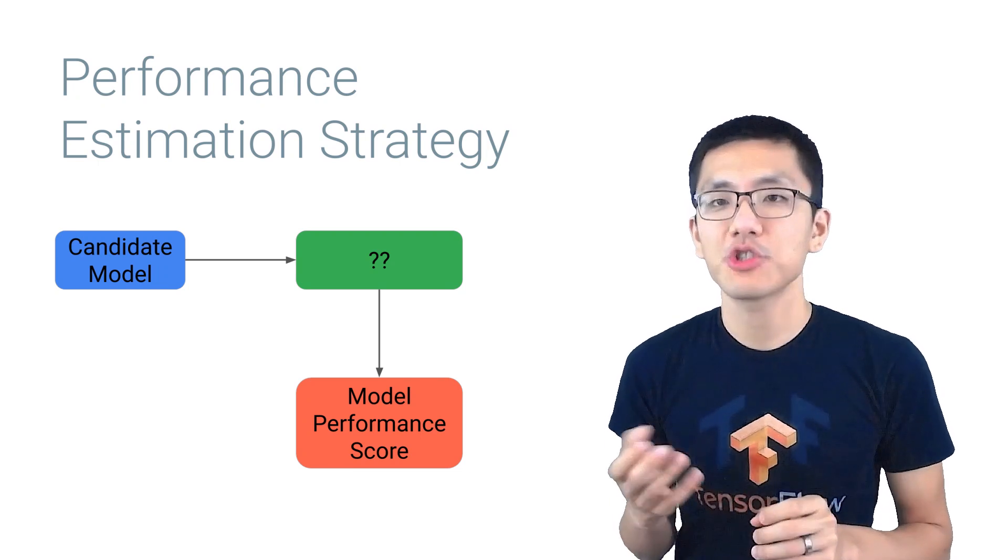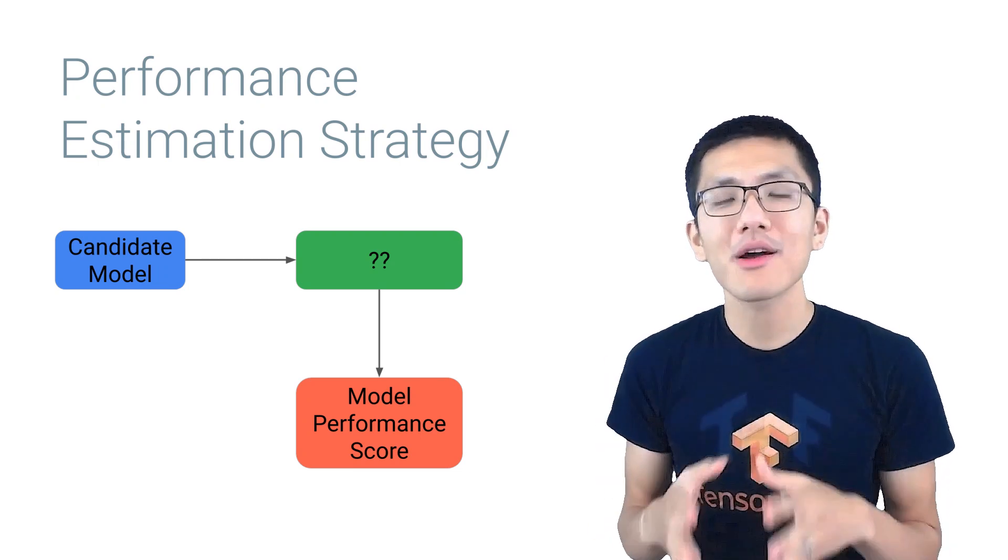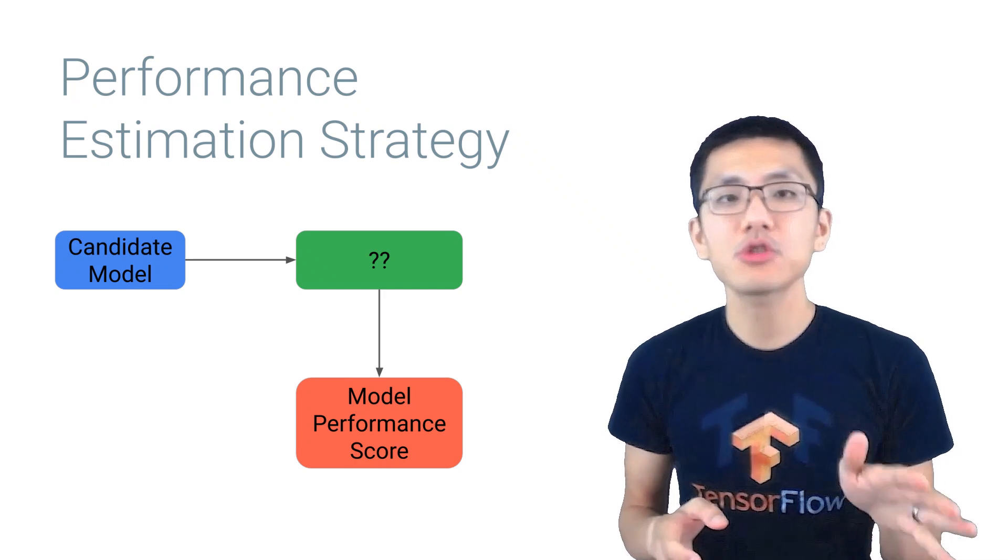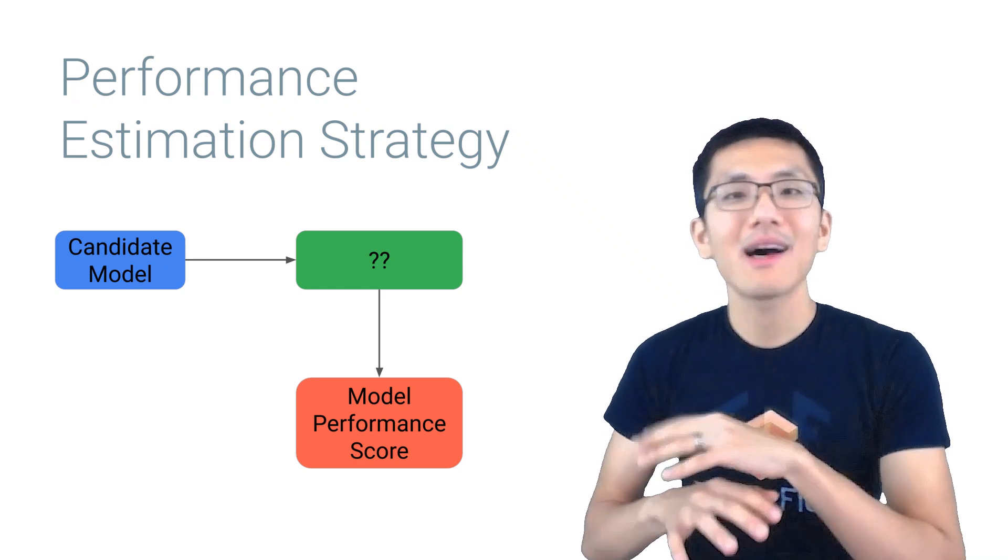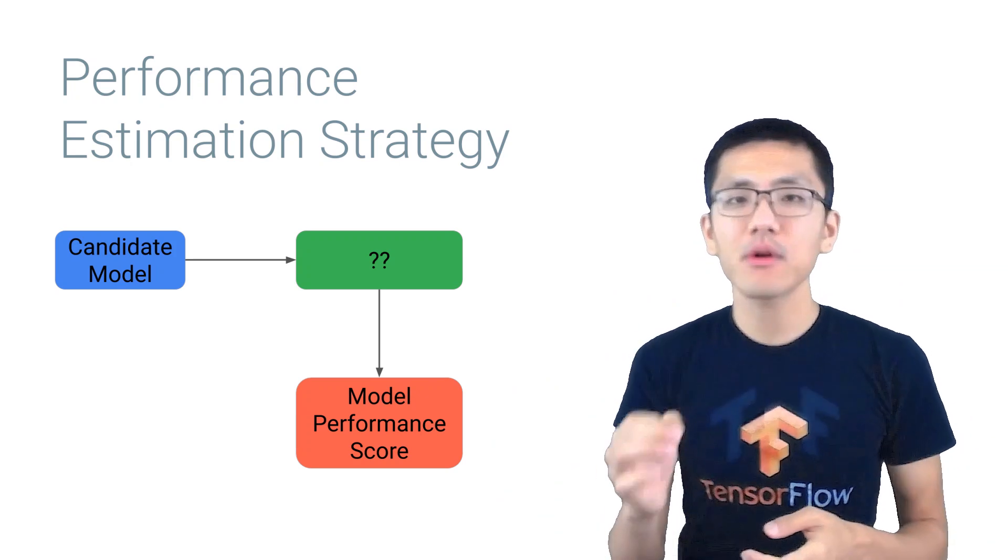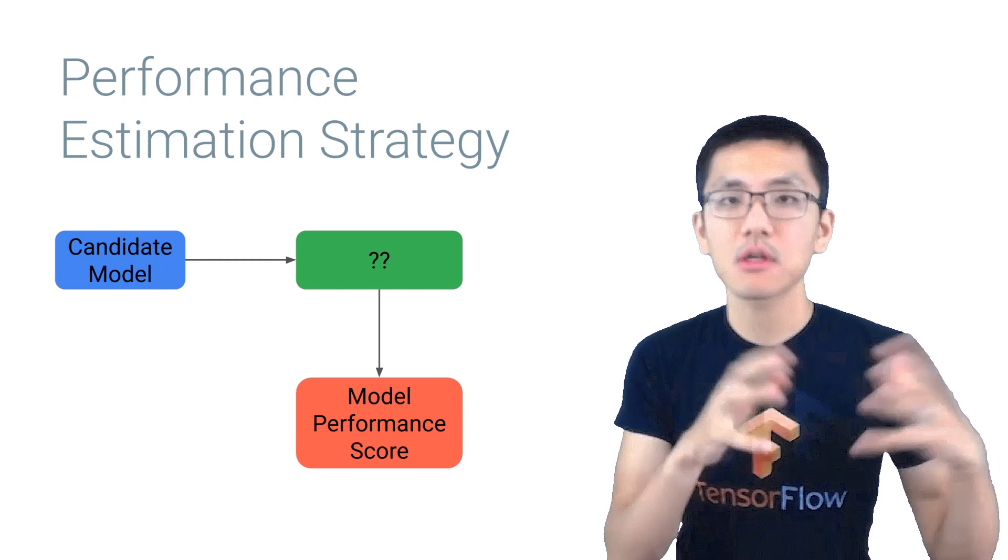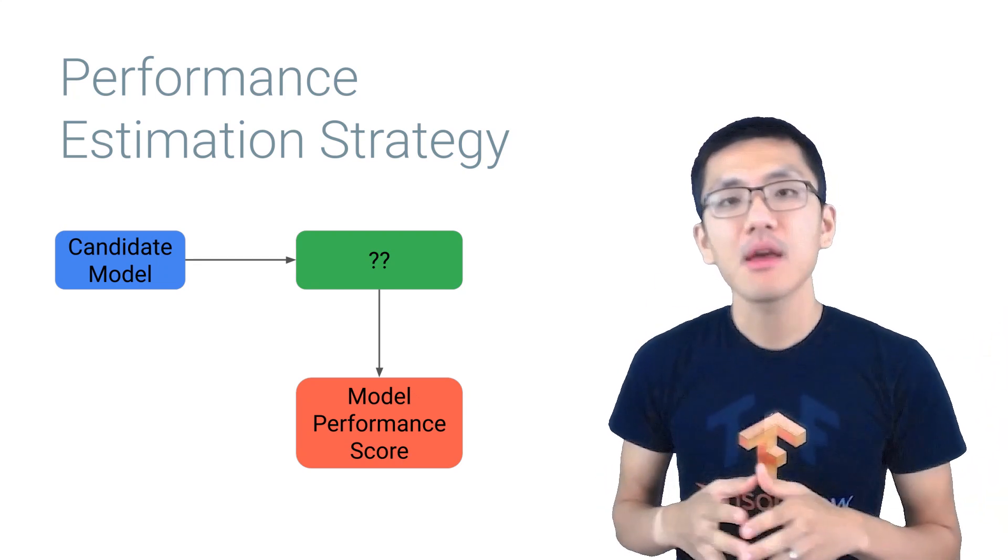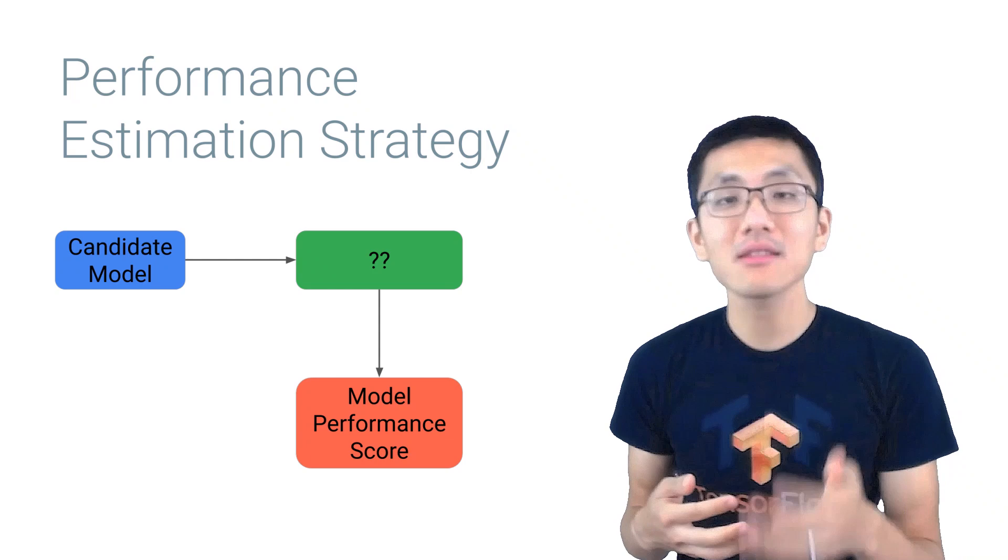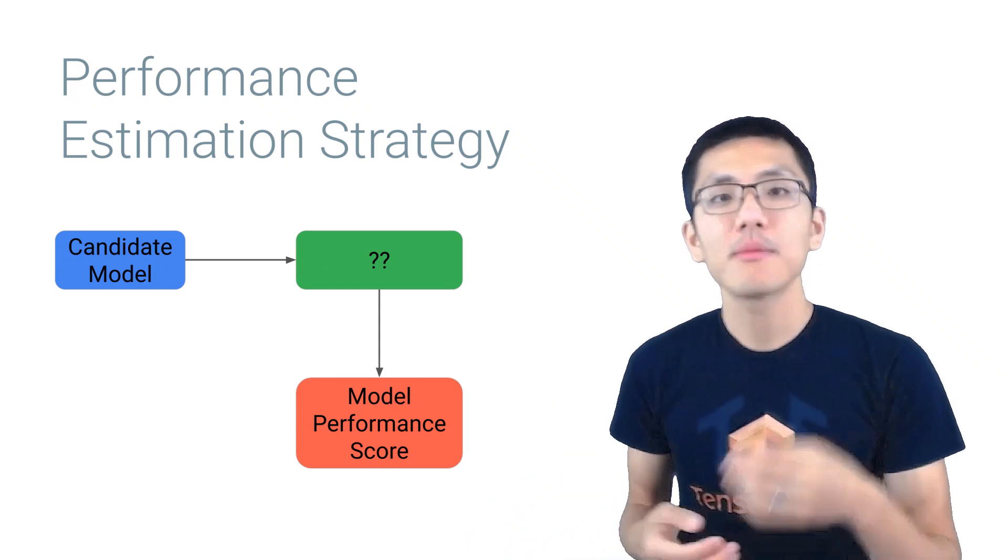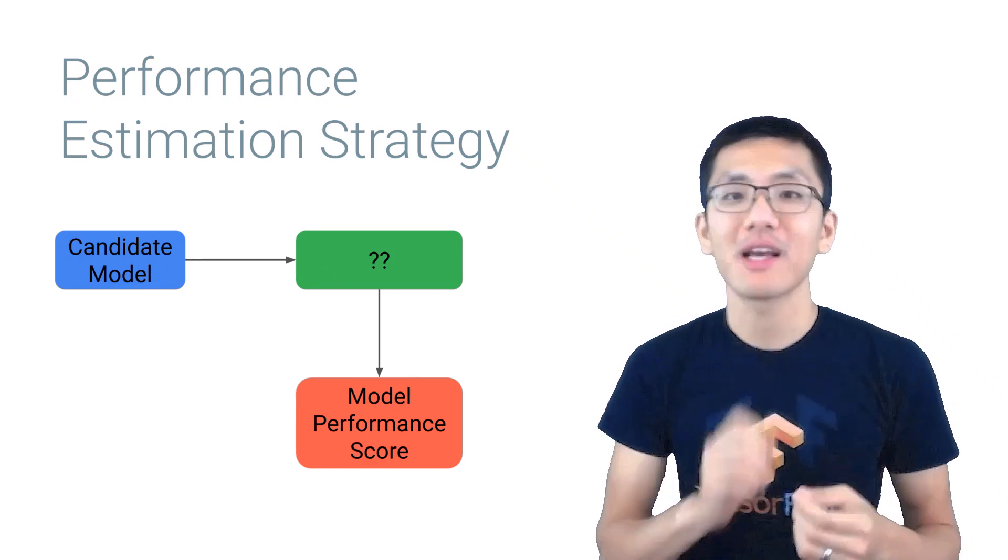Now this brings us to the third and final point, performance estimation strategy, which is all about figuring out how good a candidate model is performing. Ideally, we would just train a candidate model on the entire dataset and see how it performs on our test set. But this can prove too time-consuming for those larger training datasets. So to save time, various shortcuts are used to get an estimate of how good a candidate model might become, hence performance estimation strategy.